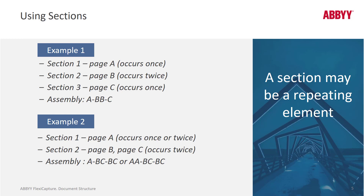In the first example, we have one page in section 1, one page in section 2, and one page in section 3. However, the page in section 2 occurs twice, so the images will flow in and be assembled as A, B, B, C. In the second example, document section 1 consists of page A, and section 2 consists of pages B and C which occur twice. Page A occurs once or twice, so when documents flow in we'll have A or AA, then BC, BC. These kinds of structures definitely happen and we need to be able to accommodate them.